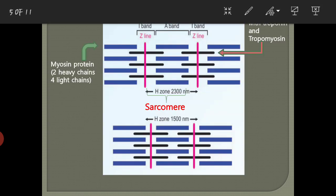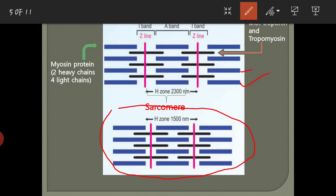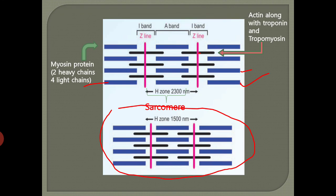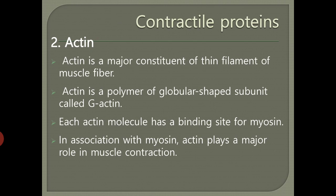Here you can see the thick and thin filaments in the sarcomere. The sarcomere is the functional unit — this whole unit is called the sarcomere. The thick filaments shown in blue are the myosin proteins, and the thin filaments are the actin proteins. These are the contractile proteins present in the sarcomere or muscle fibers.